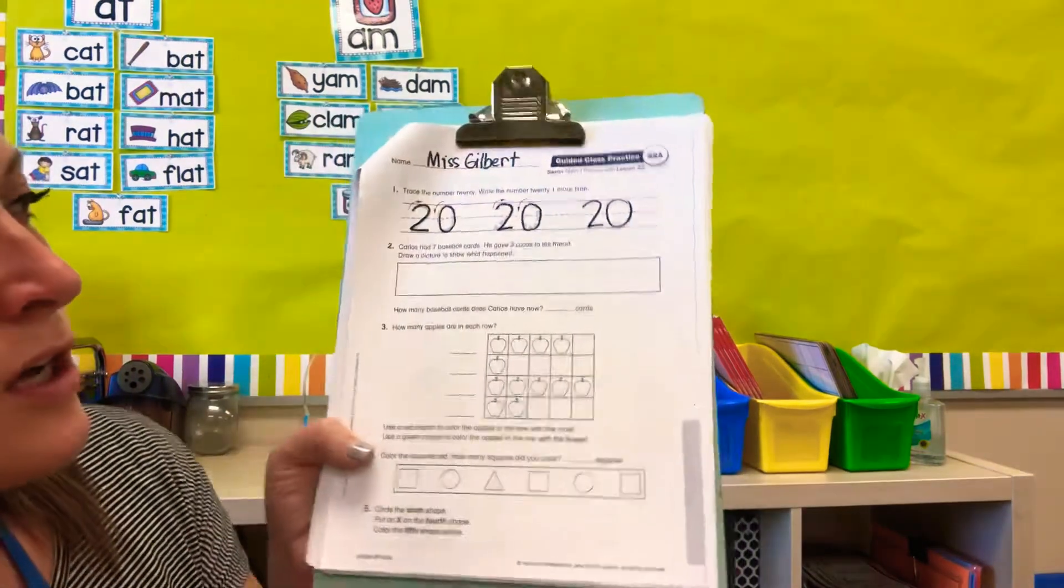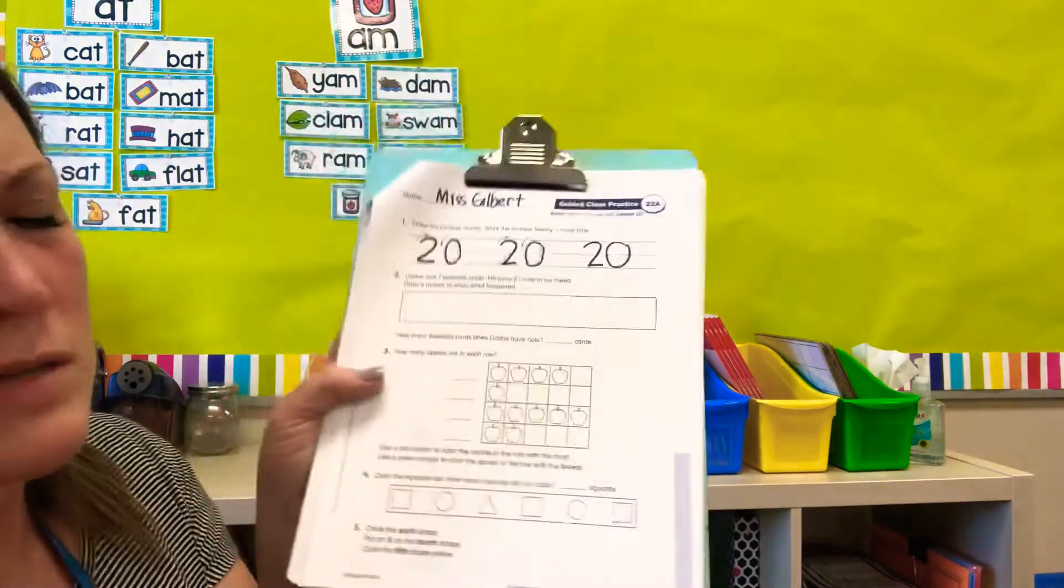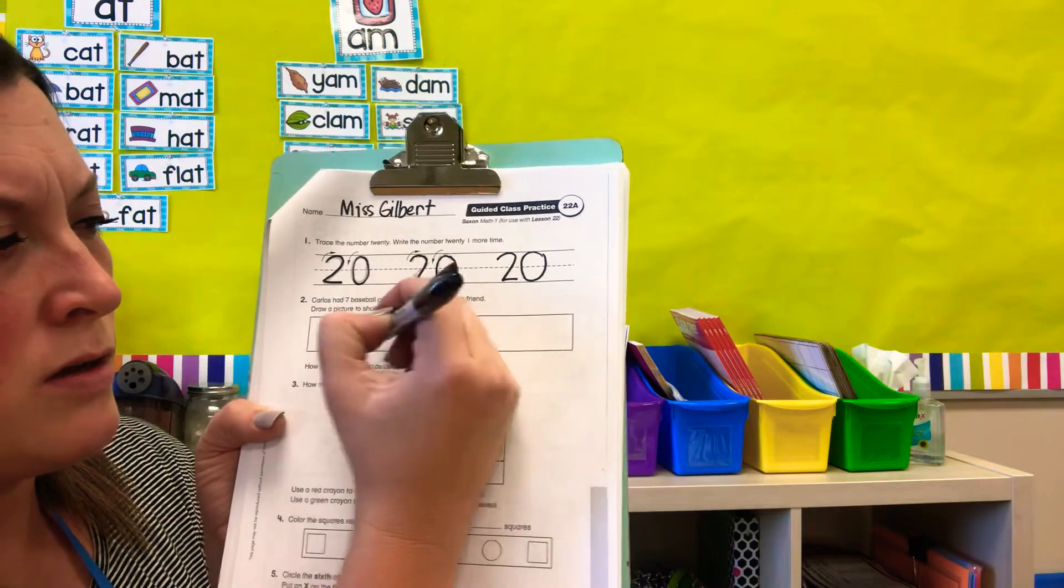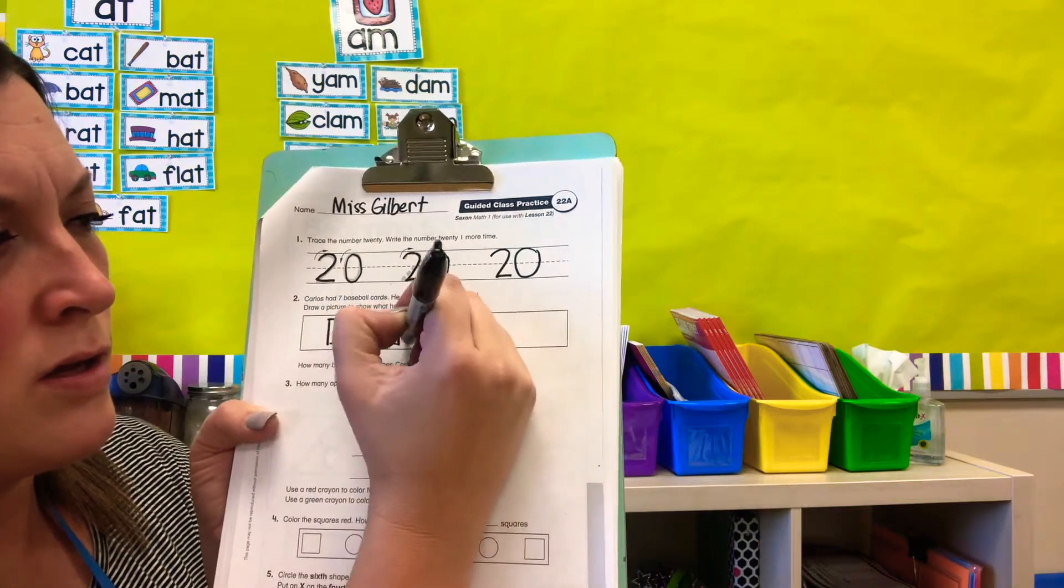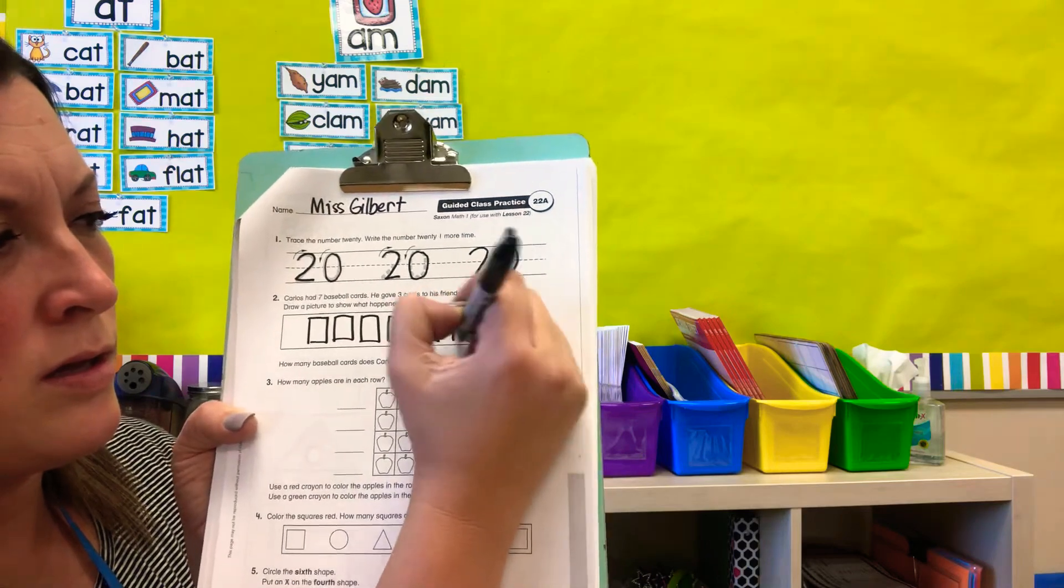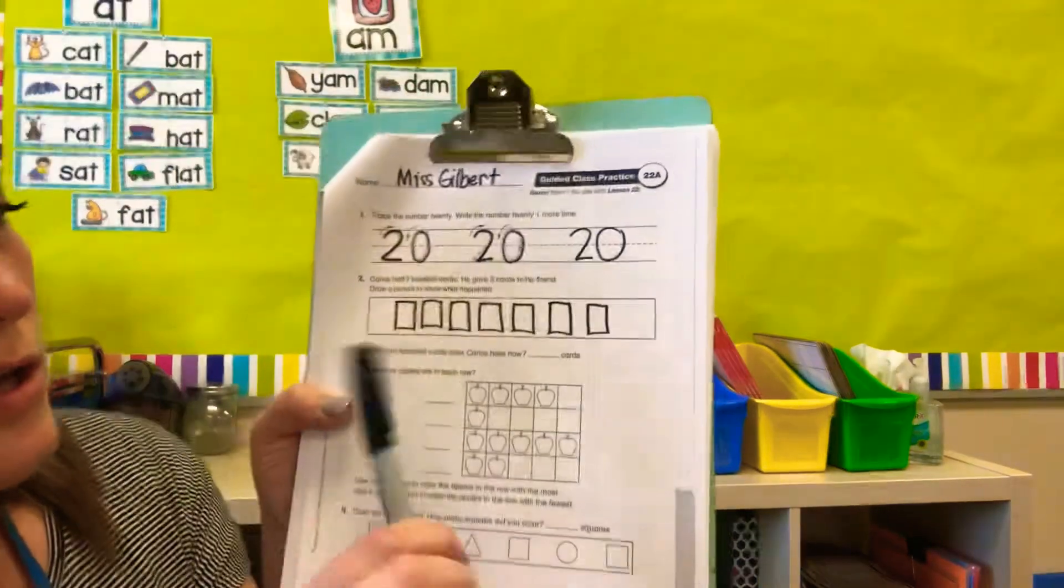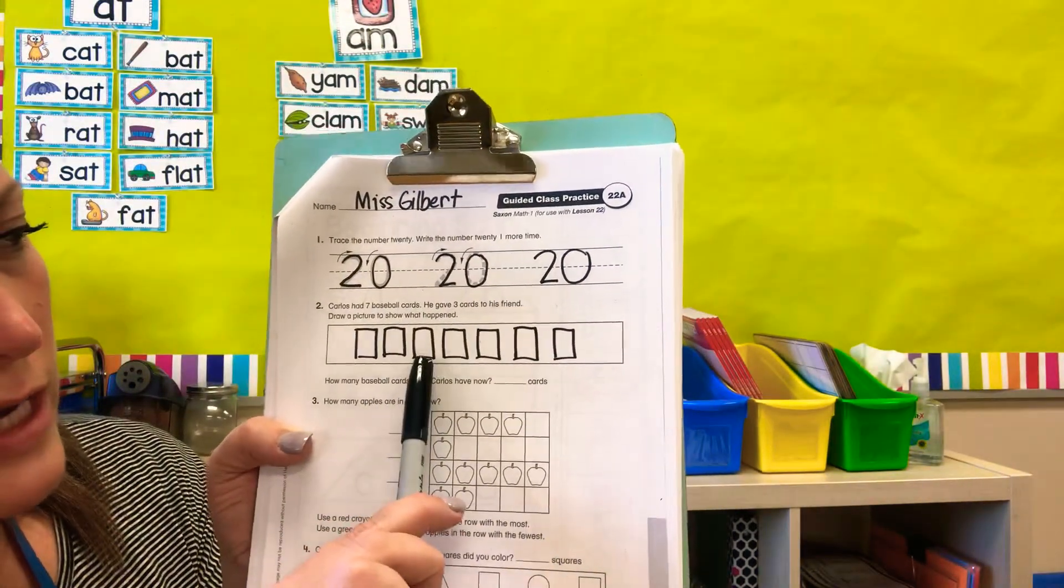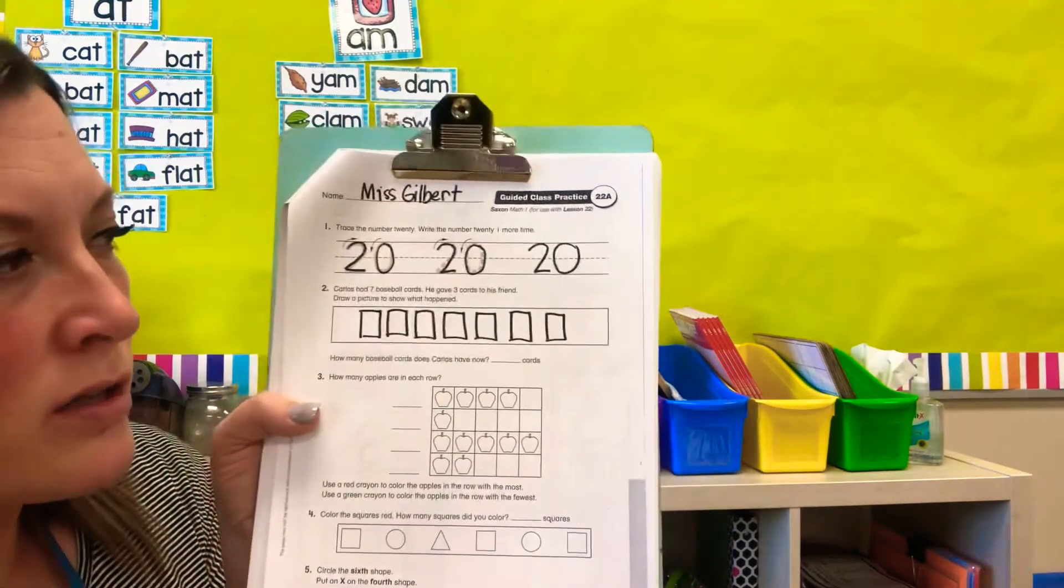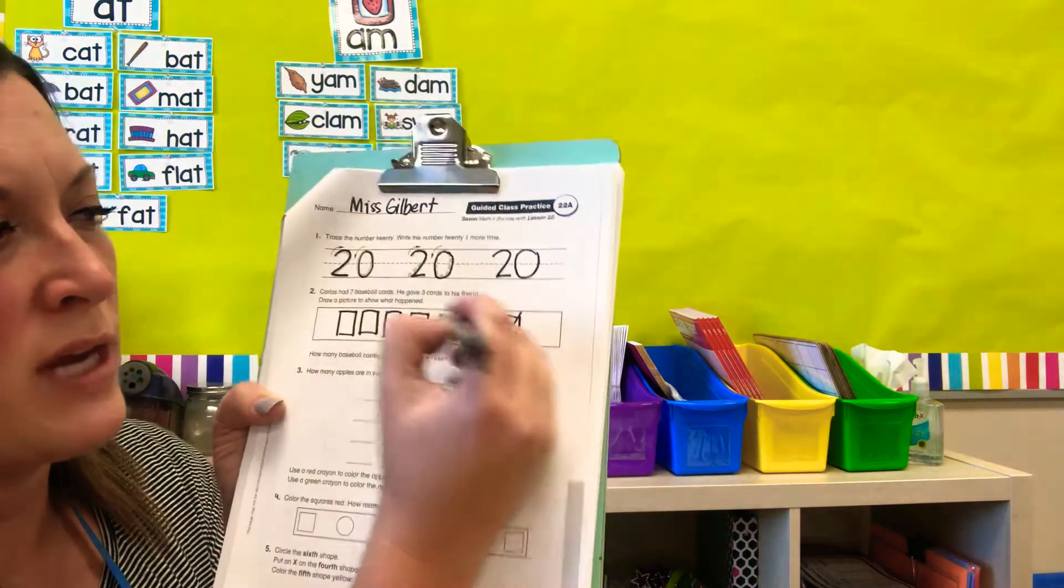Okay, moving on to number 2. It says, Carlos has seven baseball cards. For our baseball cards we're going to draw rectangles. So draw seven rectangles. Carlos had seven baseball cards. One, two, three, four, five, six, seven. He gave three cards to his friend. So we're going to cross off three because he doesn't have them anymore. He gave them away.